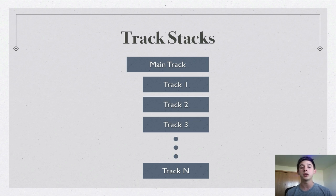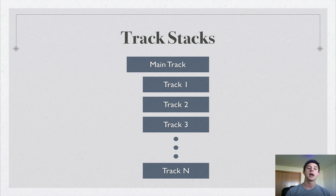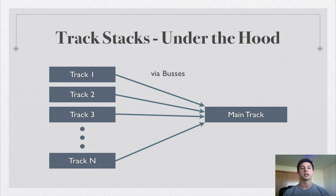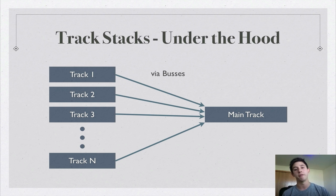So first, track stacks. This is what the view looks like when you create a track stack in your arrange window or in your track window. You're going to have a group of tracks, one through N — it could be any number — and there's a main track which we can expand and collapse. This is going to be our track stack. Now if we go in depth a little bit more and look into the mechanics of how this is actually happening, we can see that these tracks, one through N, are being bussed into an auxiliary track called the main track.